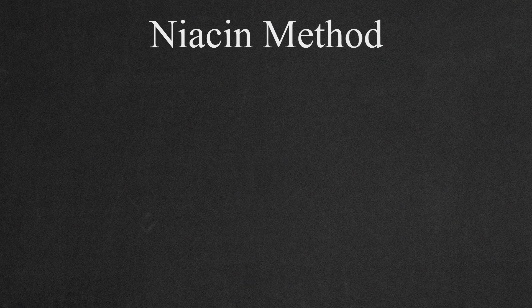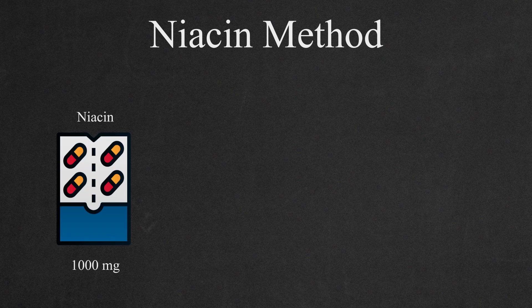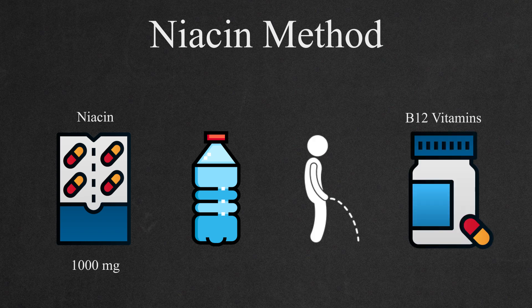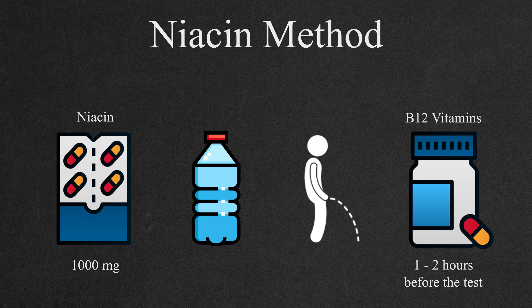How does the niacin method look like? At the day of the test, you need to take 1,000 mg of niacin. You need to drink a lot before the drug test. You need to pee as much as possible. You need to take B12 pills 1-2 hours before the test.